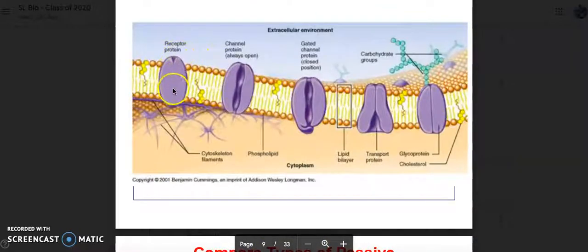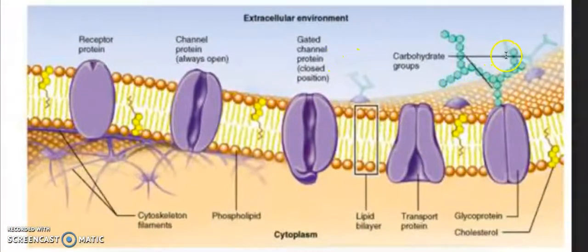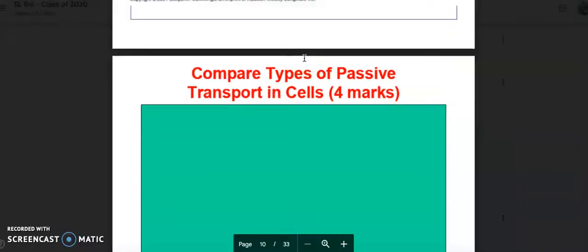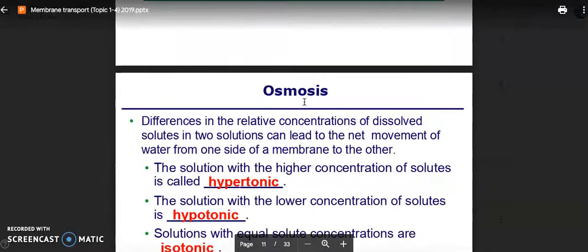Here are some examples. Here's a receptor protein, a channel protein, a gated channel protein which is in the closed position, a carbohydrate group, this is a glycoprotein, here's cholesterol within the semipermeable membrane, and then here's a transport protein. This is the cytoplasm. Compare types of passive transport in cells for four marks.